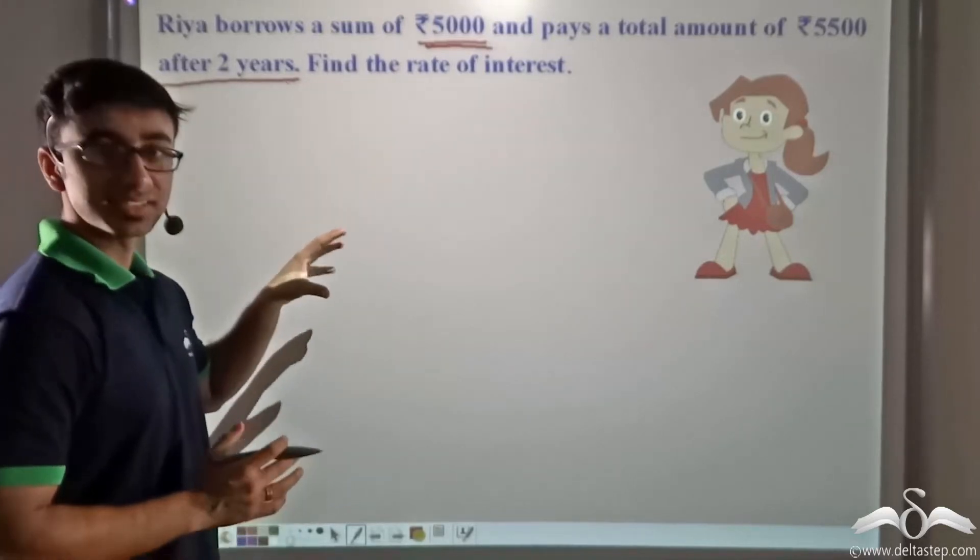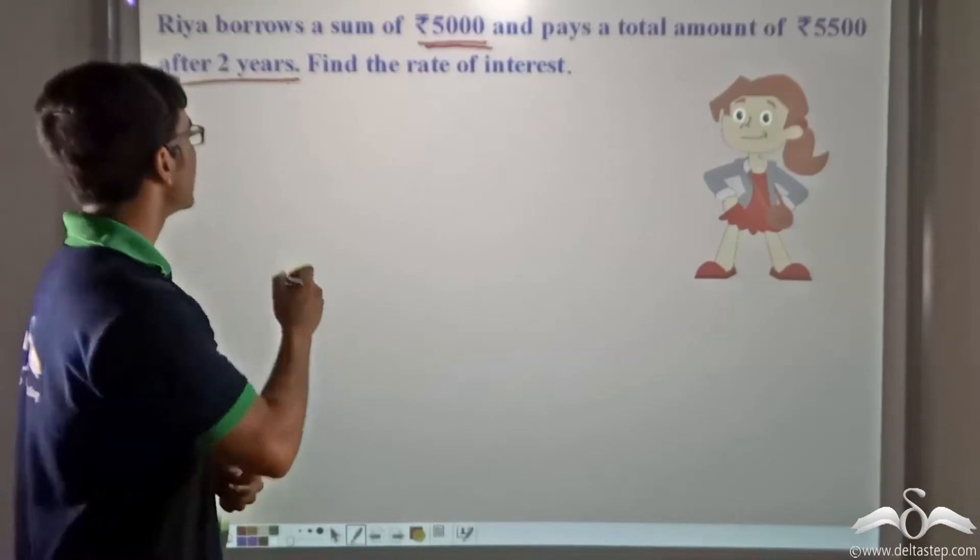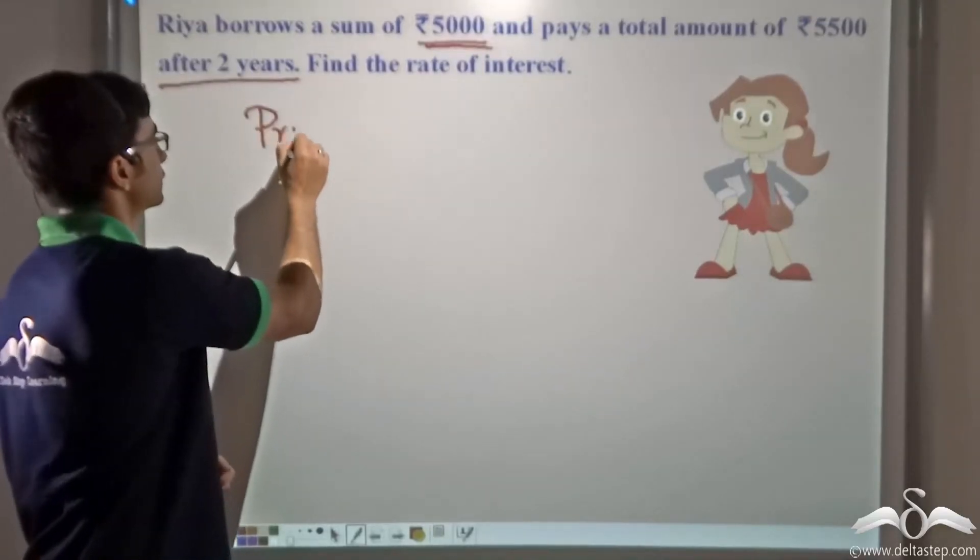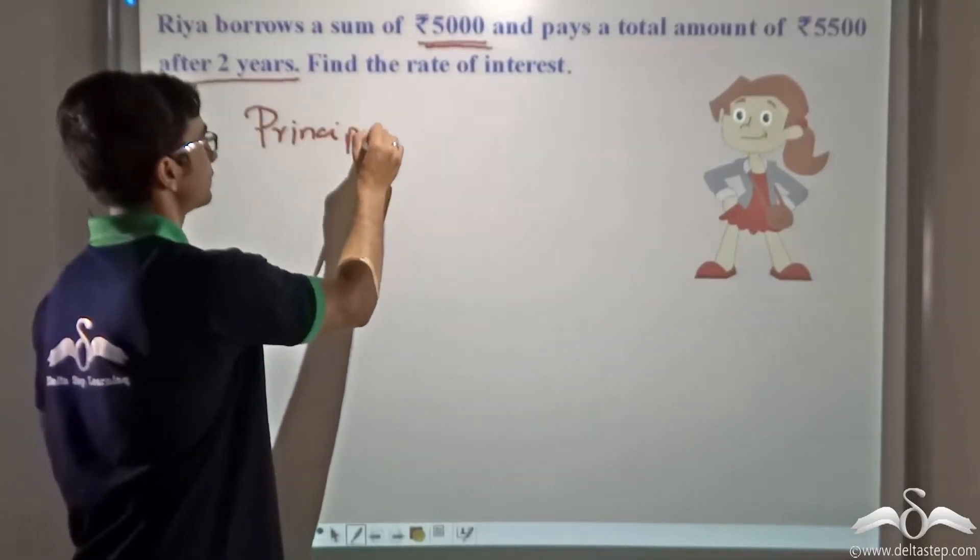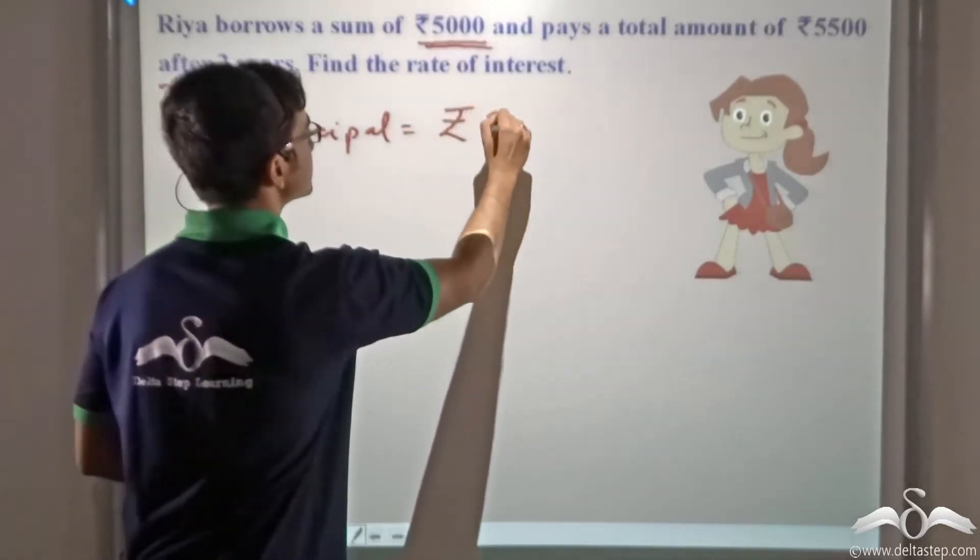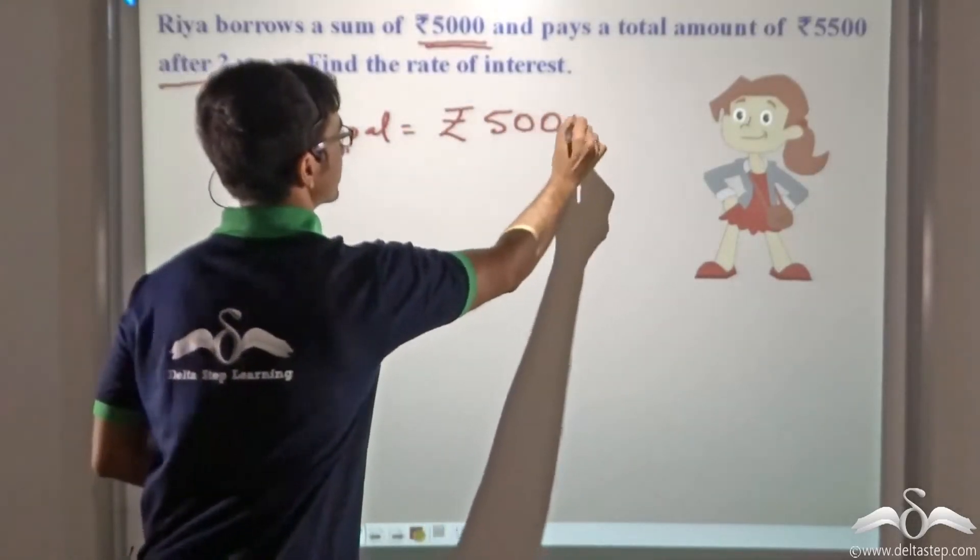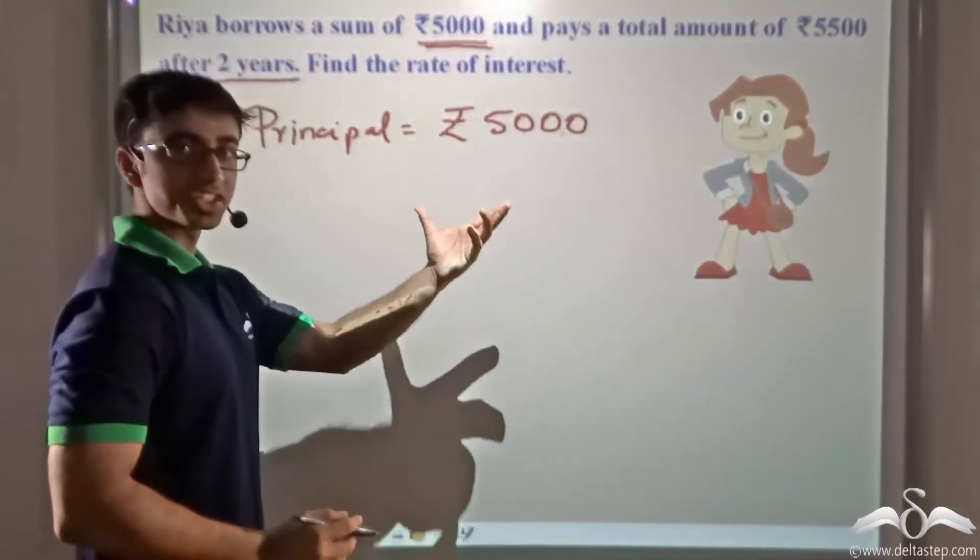Now, over here, what are the things that we have been given? We have been given that the principal is equal to Rs. 5000, because that is the money that Rhea is borrowing.